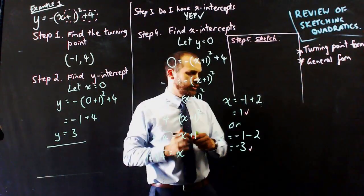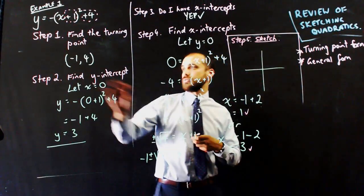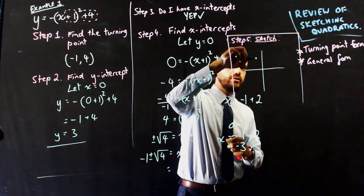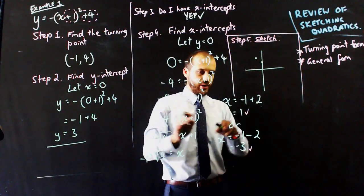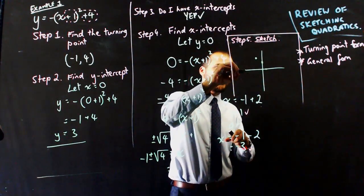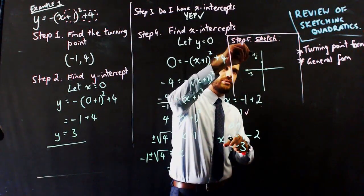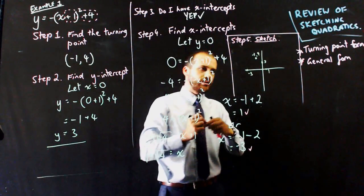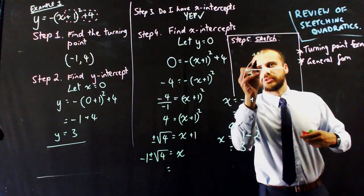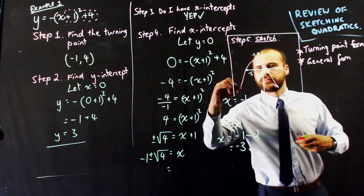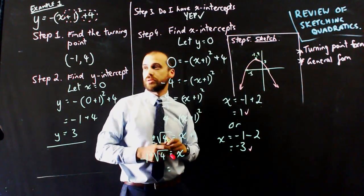Step 5: sketch. We have an x and y axis, a turning point of negative 1, positive 4, a y-intercept of 3, and x-intercepts of 1 and negative 3. Plot and label those points, then draw a nice sad-faced parabola through them. That is sketching in turning point form.